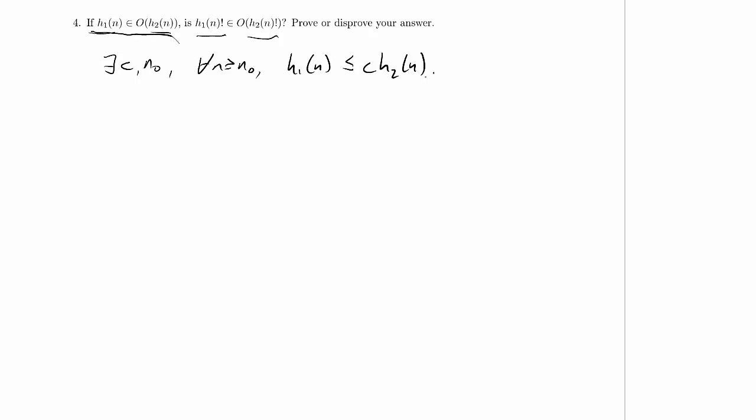And the question is whether there is some other constant, let's call it d, and some other constant, let's call it n1, so does there exist d and n1, such that for all n greater than or equal to n1, h1 of n factorial is less than or equal to d times h2 of n factorial.